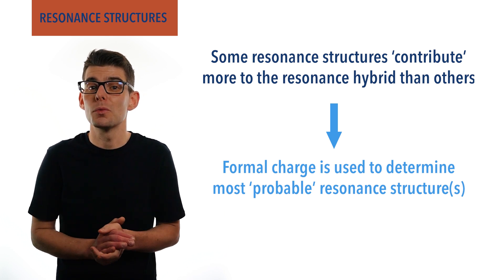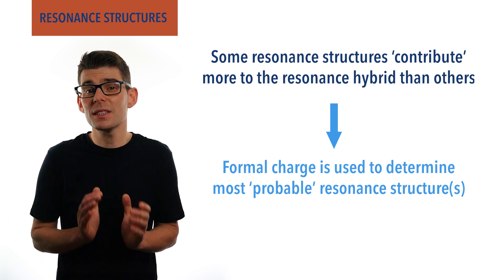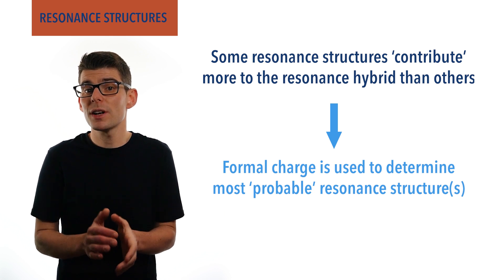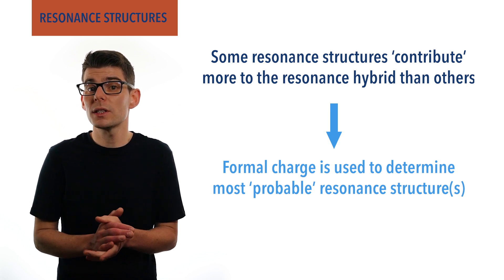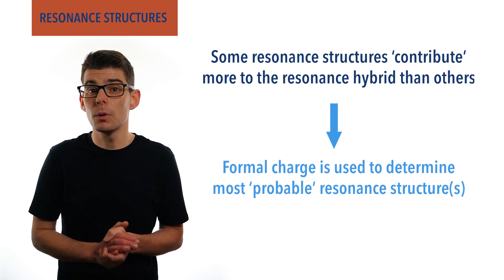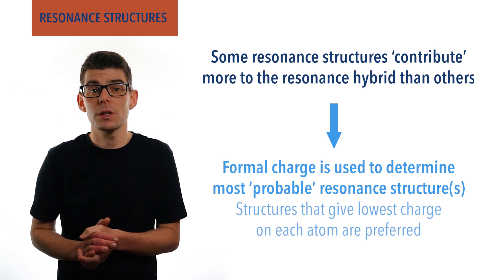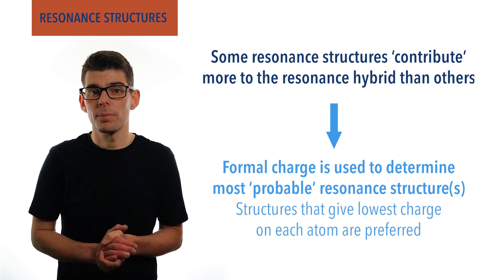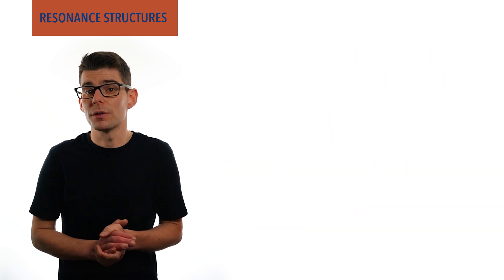We won't be covering formal charge in detail here, but in simple terms it means that the resonance structure with the smallest charges on each atom is generally the most stable and contributes the most to the resonance hybrid.